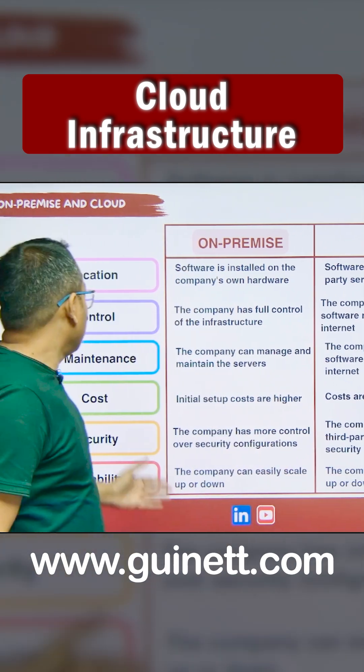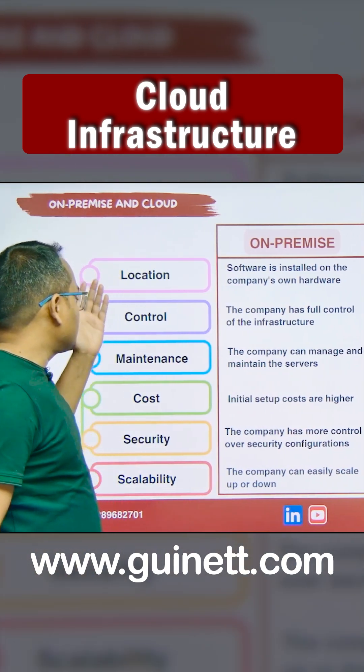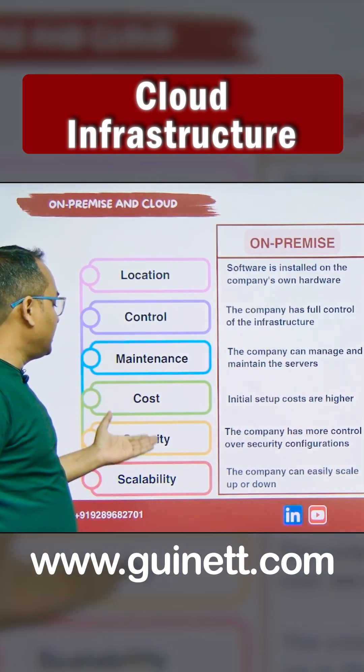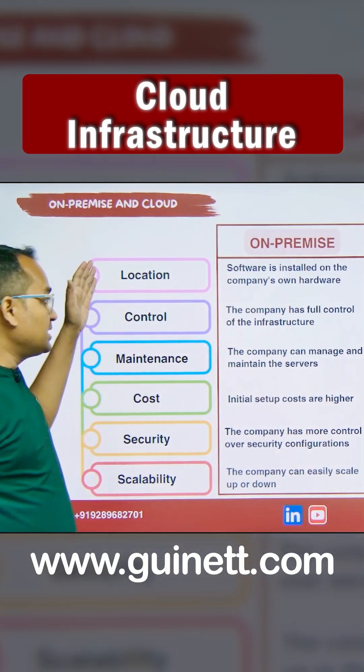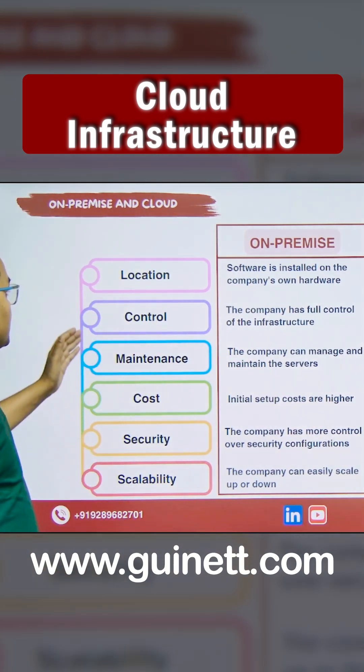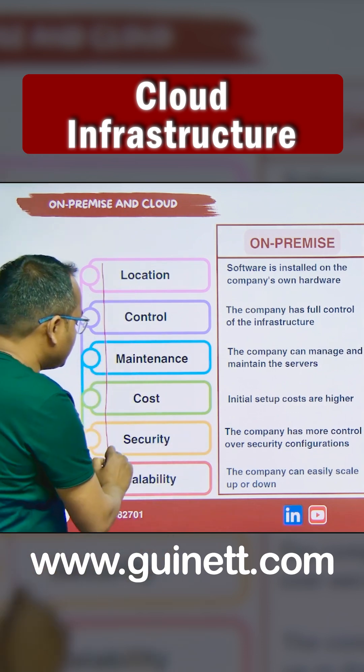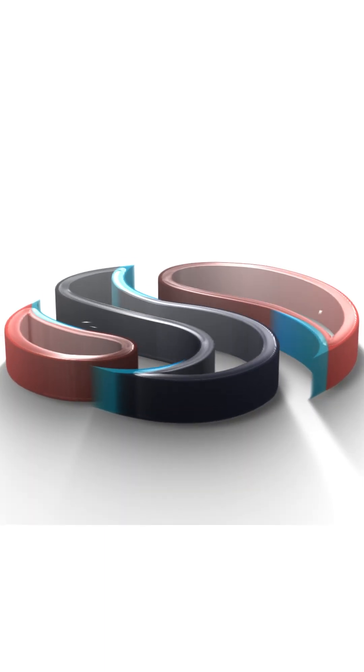The key parameters to compare cloud and on-premises are: location, control, maintenance, cost, security, and scalability. In on-premises, all of these are in your control.